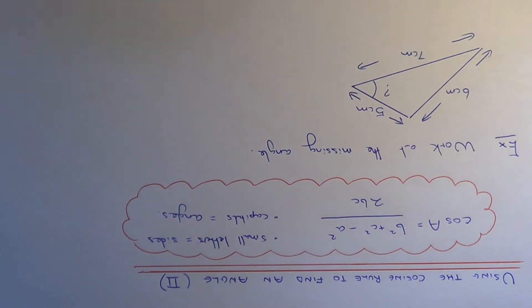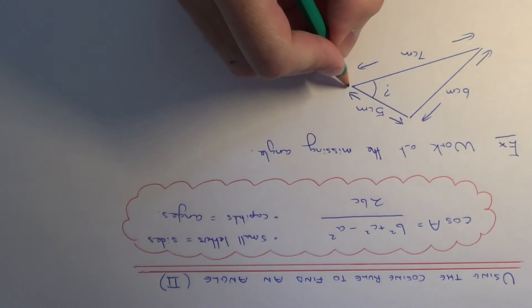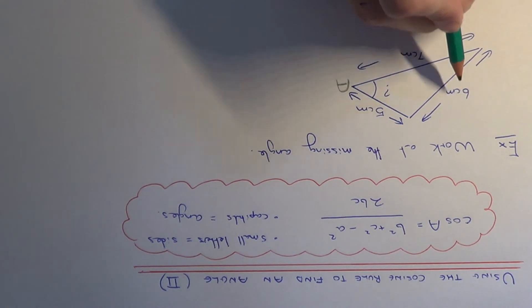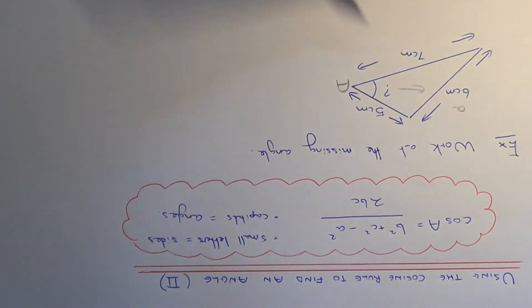So to start this off we need to label up our triangle. Since we are finding this angle here we call this angle capital A. Now since this angle here is opposite this side length here, this would mean that this side length here is little a.